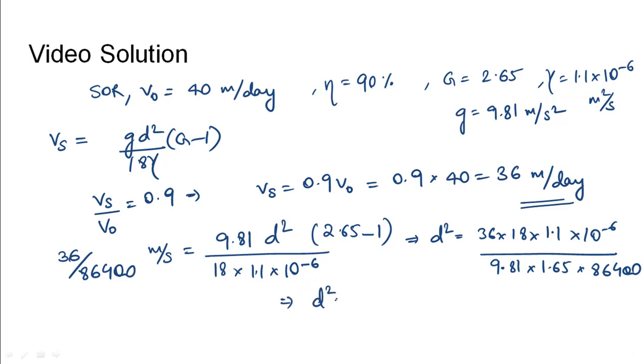This gives d² = 5.0968×10⁻¹⁰. Taking the square root: d = 2.2576×10⁻⁵ m, which can be written as 22.576×10⁻⁶ meters.